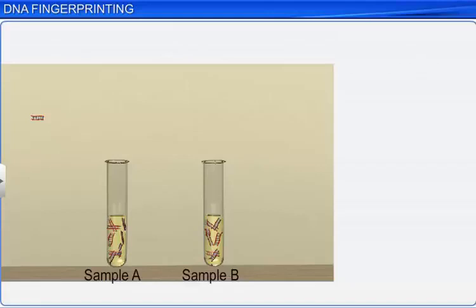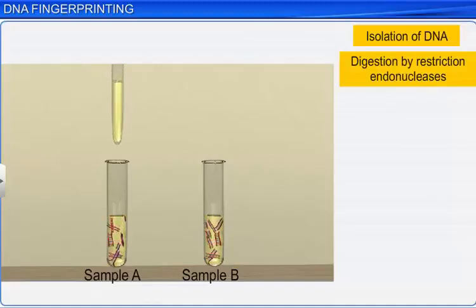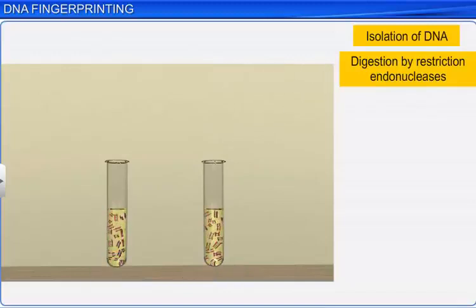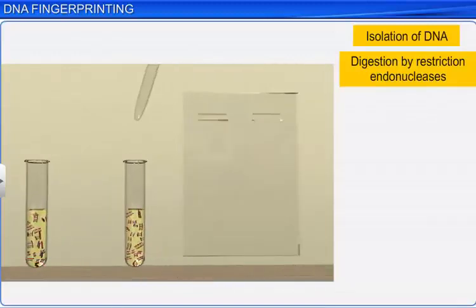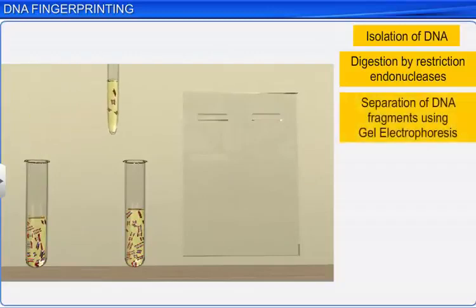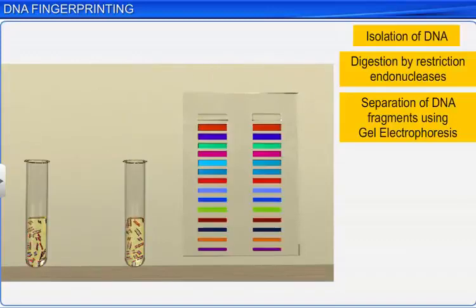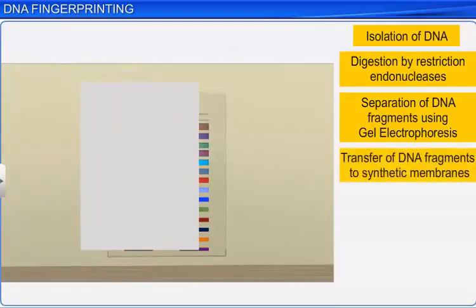Let's now study the steps involved in the DNA fingerprinting technique. First, the DNA is isolated, and then digested by restriction endonucleases, which results in DNA fragmentation. Next, these DNA fragments are separated with the help of gel electrophoresis, and then transferred to synthetic membranes, like nylon or nitrocellulose.